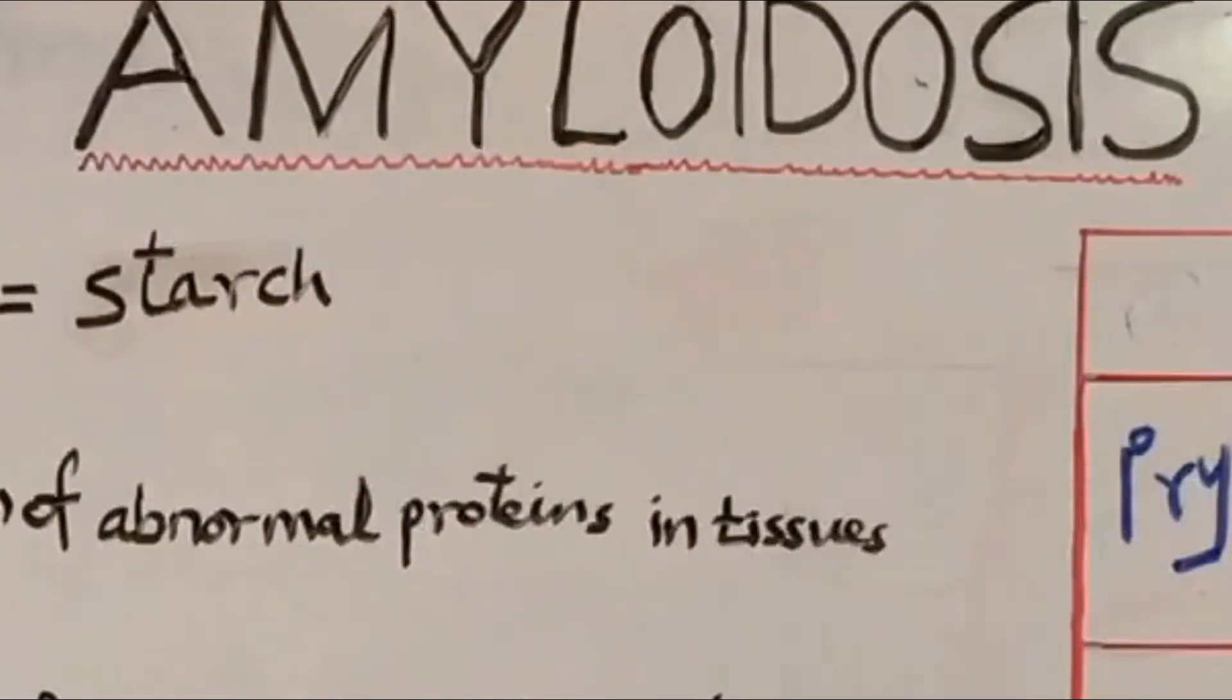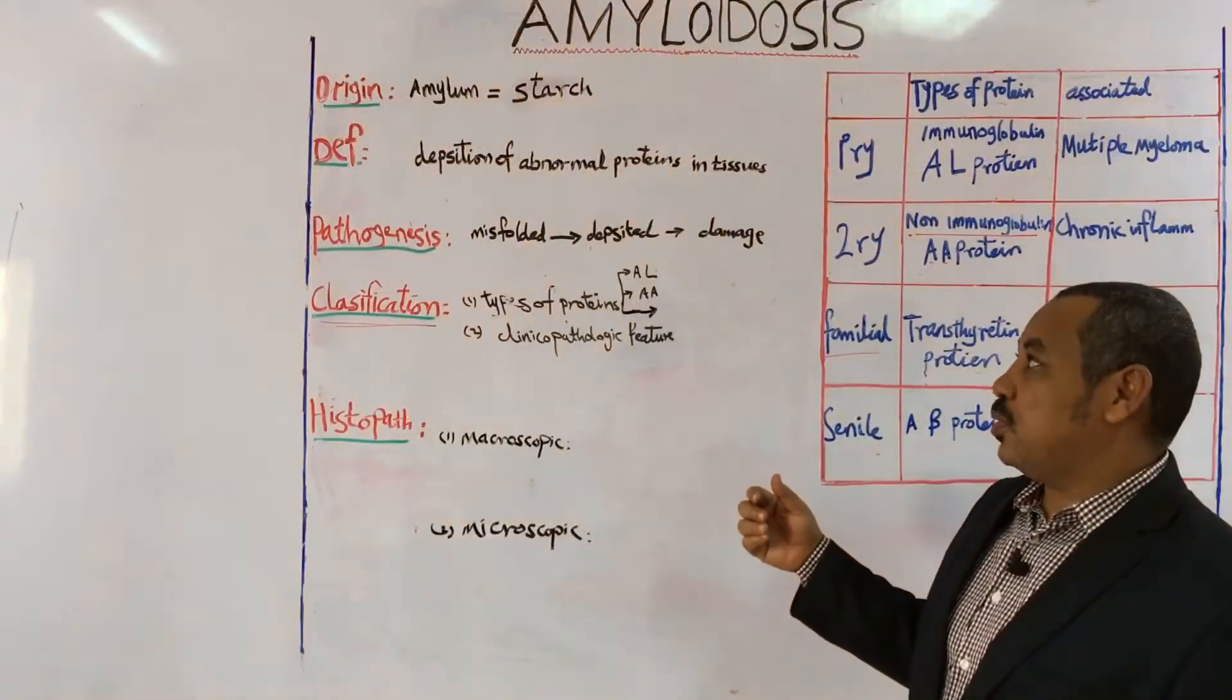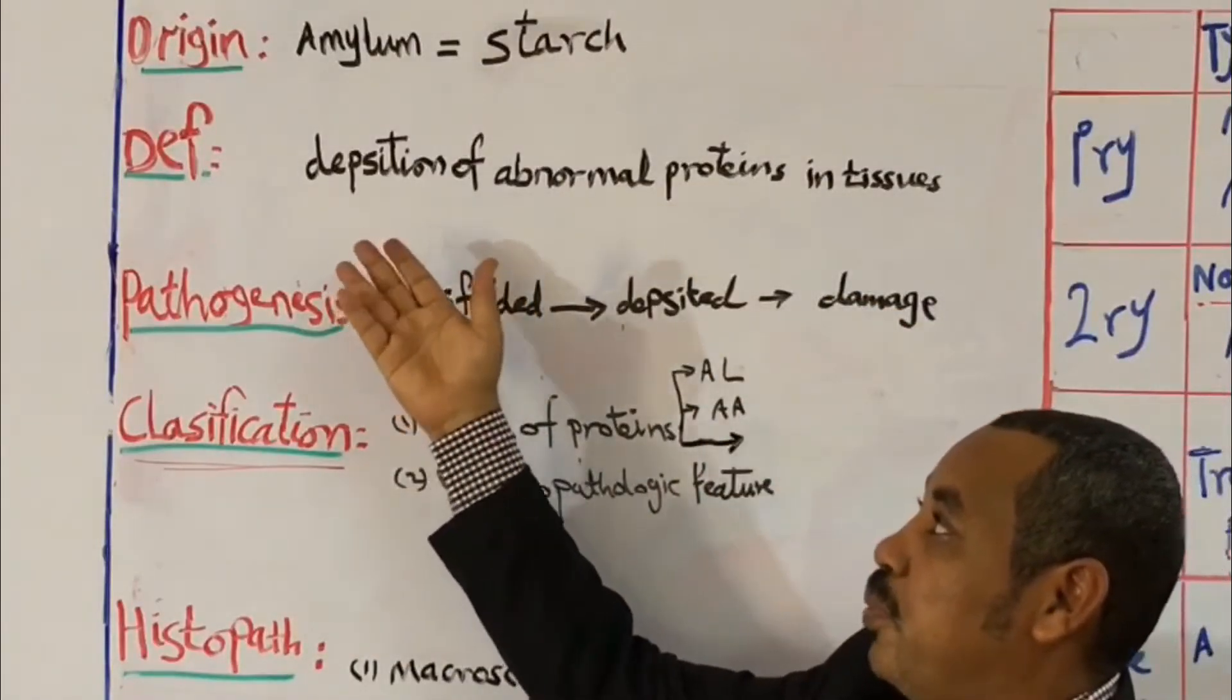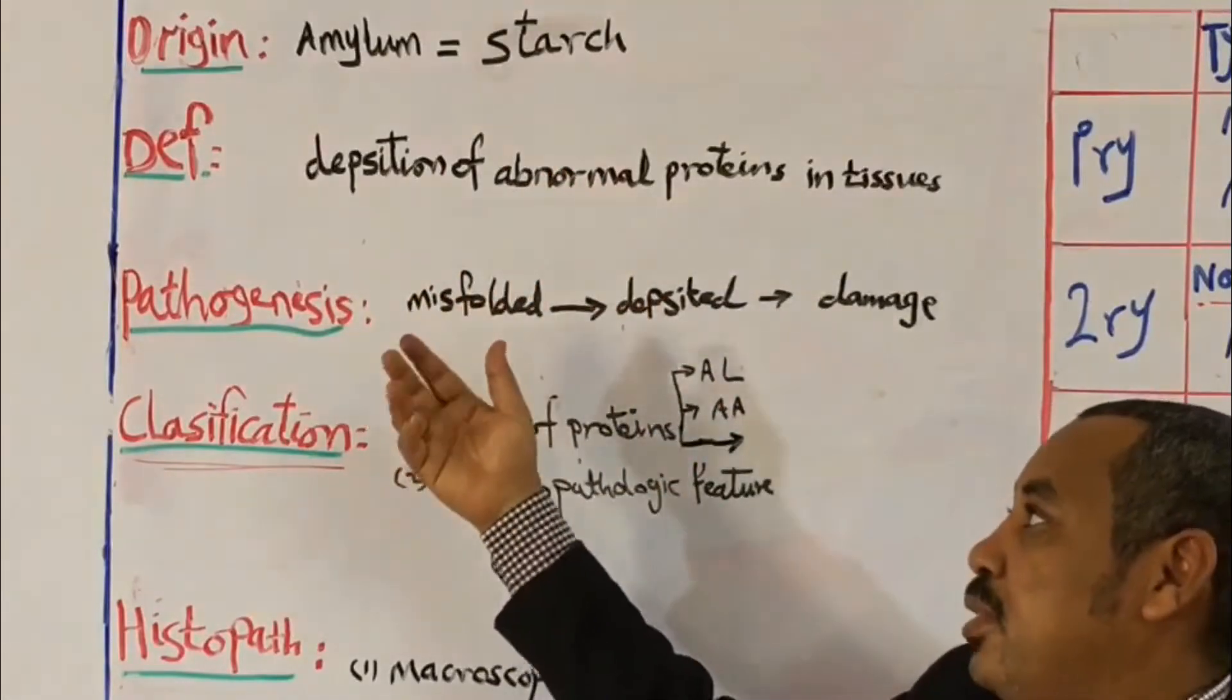So I will go over it in a quick and brief manner. It's called amyloidosis, this topic. I have to go over these points: number one, origin of the name of amyloidosis, from where comes the name?